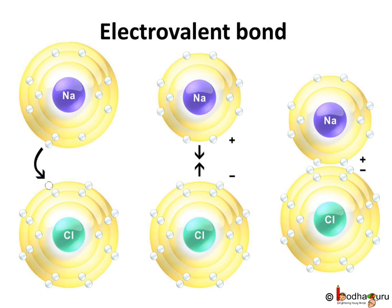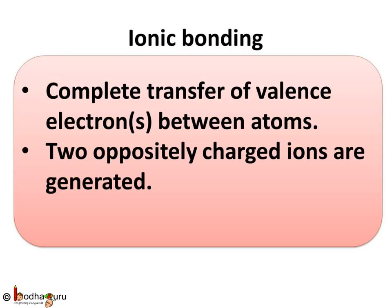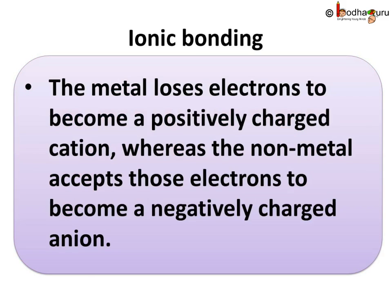Thus, cations and anions are bound together with an electrostatic force of attraction. As the concept has been explained in terms of valence electrons, it is also called an electrovalent bond. To sum up: the chemical bond formed between two atoms due to transfer of electrons from one atom to the other is called an ionic bond or electrovalent bond. In ionic bonding, there is complete transfer of valence electrons between atoms and two oppositely charged ions are generated. The metal loses electrons to become a positively charged cation, whereas the non-metal accepts those electrons to become a negatively charged anion. That was all about ionic bonding or the electrovalent bond.